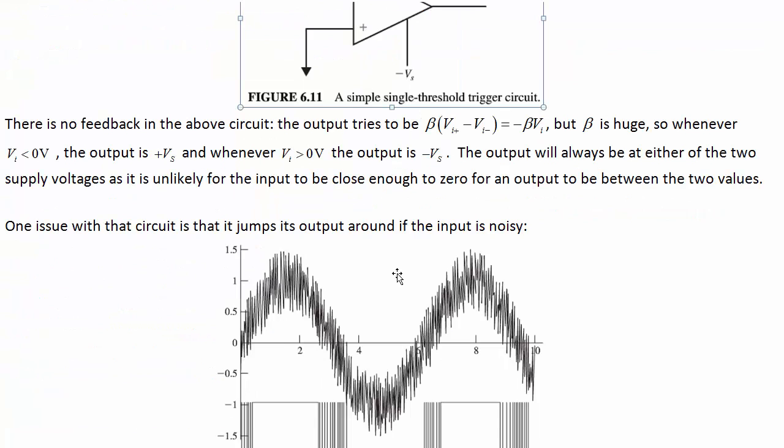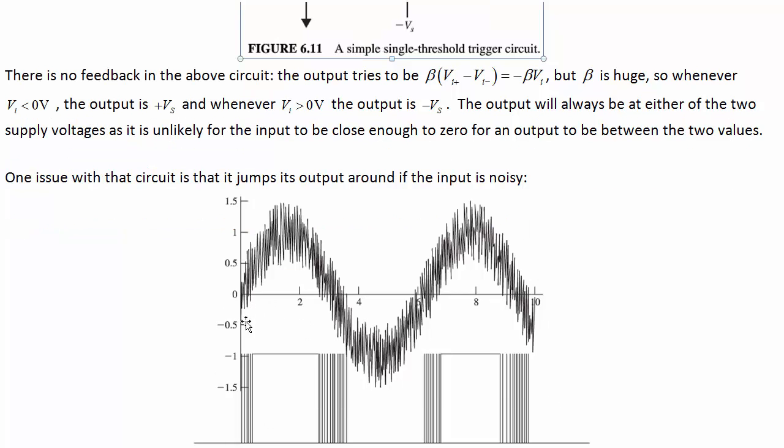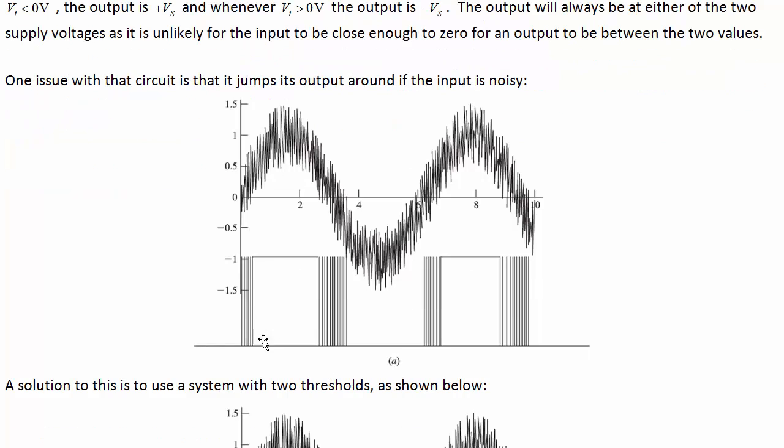One problem with this circuit is that if the input is a little bit noisy, so it's trying to be a sine wave here, but it's kind of fuzzy, then the output is going to jump around every time this input crosses 0. Maybe we don't want an output that is jumping around quite so fast that makes it look like the input signal is a lot higher frequency than it really is.